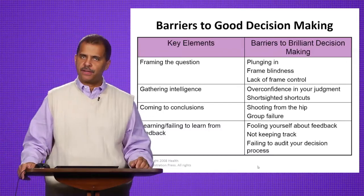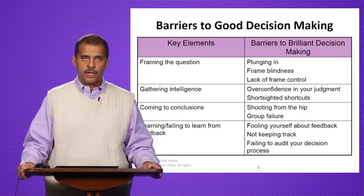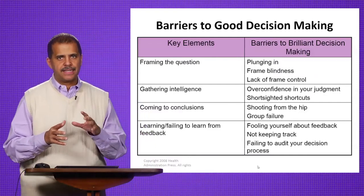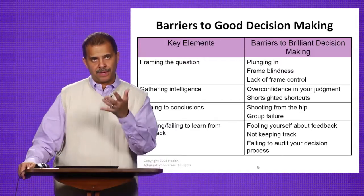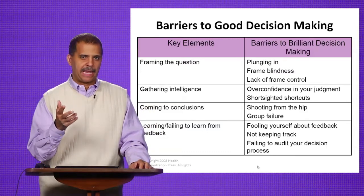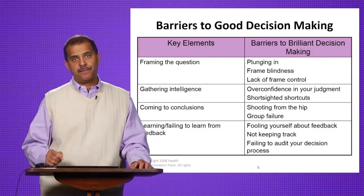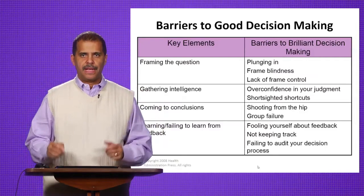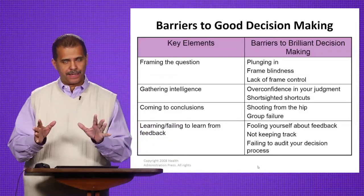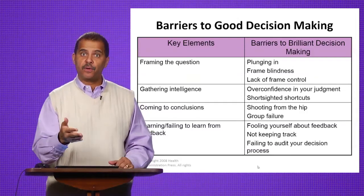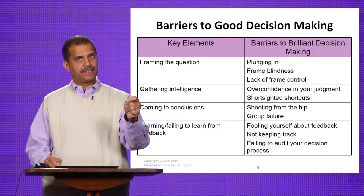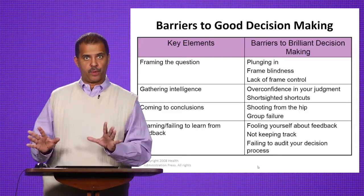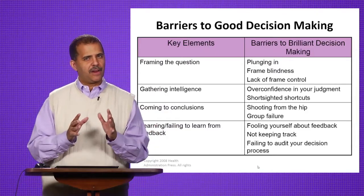We'd all like to make good decisions, but there are four barriers to good decision-making identified in the scientific literature. The first is framing the question — the way you ask a question affects the response. For example, a recent survey asked the same individuals two questions: 'Are you in favor of Obamacare?' — many said no. Then: 'Are you in favor of the Affordable Care Act?' — they said yes. Because the Affordable Care Act equals Obamacare, the framing changed the answer entirely. Be very careful about how you frame things.